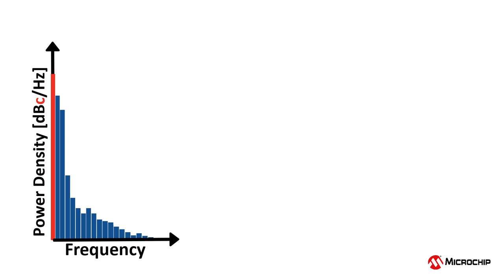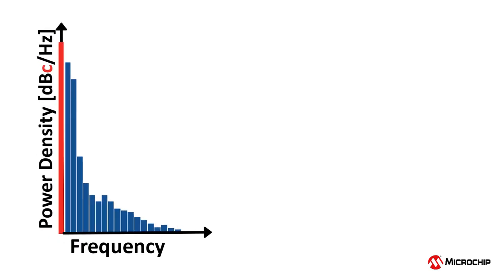All of the non-ideal spectral phase noise component frequencies are displayed in terms of their offset from the carrier frequency, as we see here.